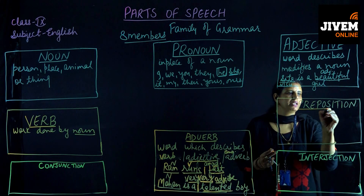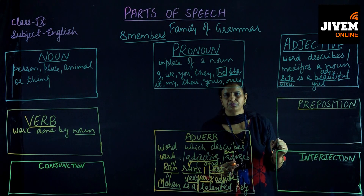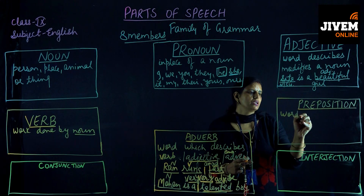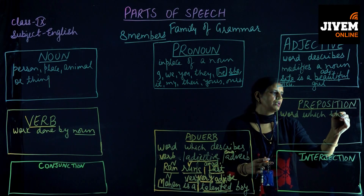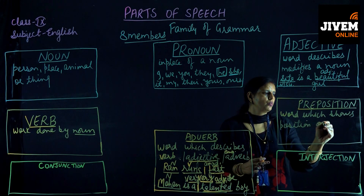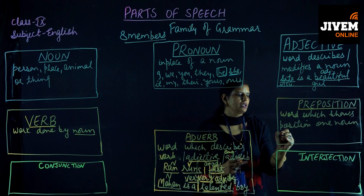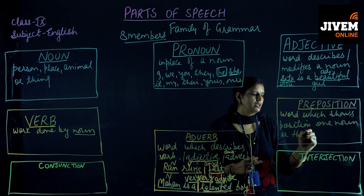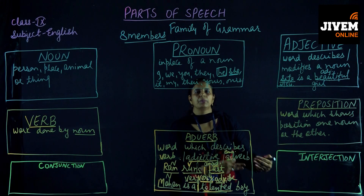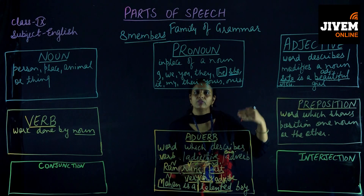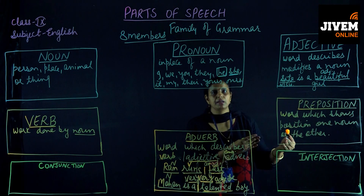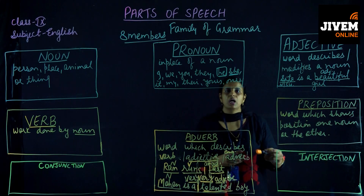The next member of the family is preposition. A preposition is a word which shows a connection or position of one noun with another. It depends upon the action, time, or distance — we will discuss that in the next videos. Many words come in this category, like: in, on, at, behind, beside, in front of, after, through — all these words come in the category of preposition.